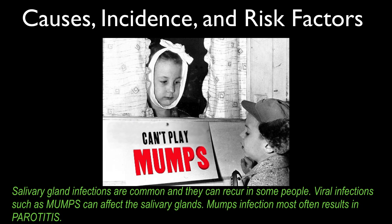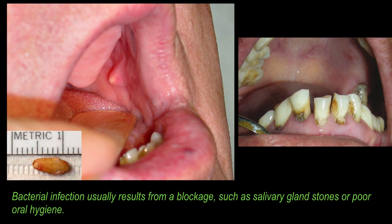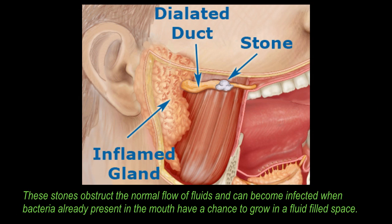Salivary gland infections are common and they can recur in some people. Viral infections such as mumps can affect the salivary glands. Mumps infection most often results in parotitis. Mumps is a rare infection today because of immunization with the MMR vaccine. Bacterial infections usually result from a blockage such as a salivary gland stone or poor oral hygiene. These stones obstruct the normal flow of fluids and can become infected when bacteria already present in your mouth have a chance to grow in a fluid-filled space.